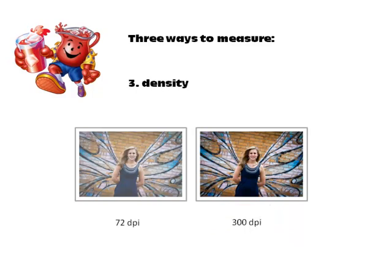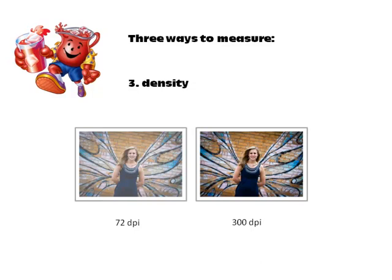The third way we can look at this is measuring density. The photograph on the left is 72 dots per inch, and the photograph on the right is 300 dots per inch. They're the same size, but the density is different. The photo on the left is washed out because it doesn't carry as much data as the one on the right. 300 dpi has a lot more detail and contrast because the resolution is higher.